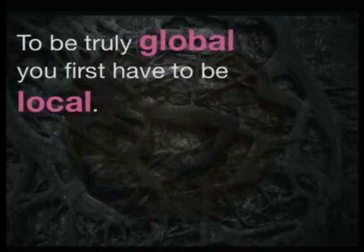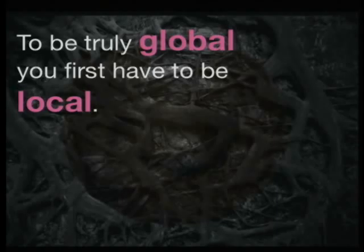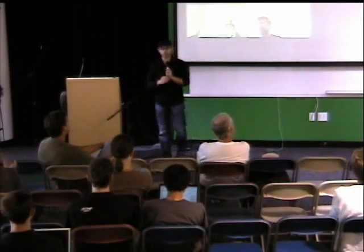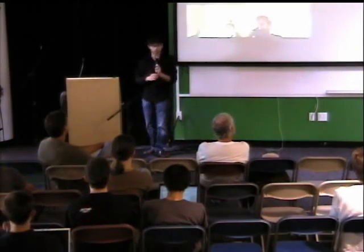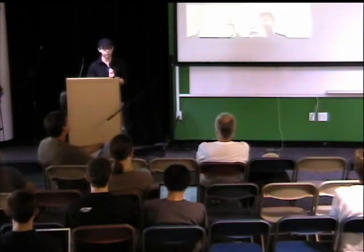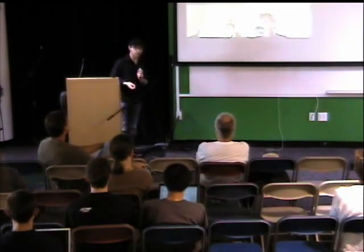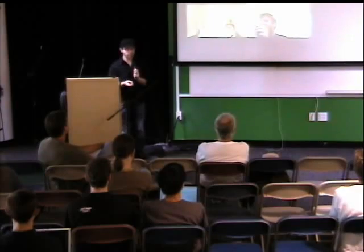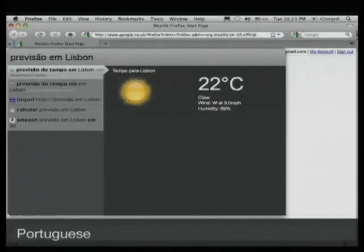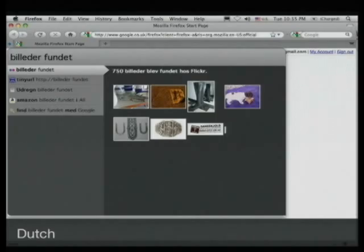With Google, you type what you want to find. With Ubiquity, you type what you want to do. But to be truly global, you have to first be truly local. It's fine that we're talking about extensibility in English, but that doesn't help people who live in Taiwan or Denmark. So we've been figuring out how to create grammars which are extensible to other languages — so that you can have Ubiquity work in Japanese, in Portuguese, in Dutch.